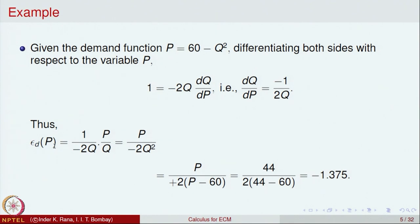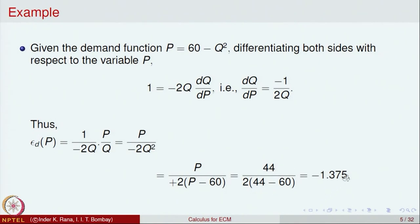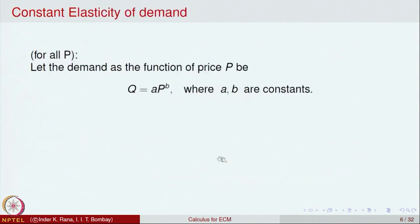Substituting q² = 60 - p, the elasticity becomes p / (2(p - 60)). At price p = 44, this gives approximately -1.375. So the coefficient of elasticity of demand at price 44 is -1.375. Recall the interpretation: between 0 and -1 is inelastic, at -1 is unit elasticity, and from -1 to minus infinity is elastic. This is how we calculate and interpret the elasticity at a particular price.